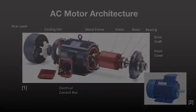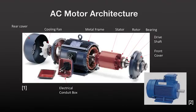Shown in this slide is the general architecture of an AC induction motor. The rotor revolves within the stator, a fixed electromagnet housed inside a metal frame. A drive shaft supported by bearings is fixed to the rotor, supplying torque and speed to an external mechanism.